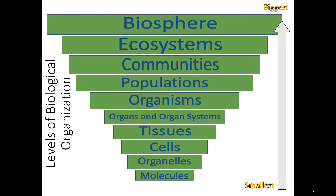Unit four covers genetics and heredity. Unit five covers how organisms change over time through a process called evolution. Unit six is our final unit, where we talk about how organisms interact with their communities, ecosystems, and overall the biosphere. I just wanted to show you this graphic organizer so you know how we'll progress through biology this year.